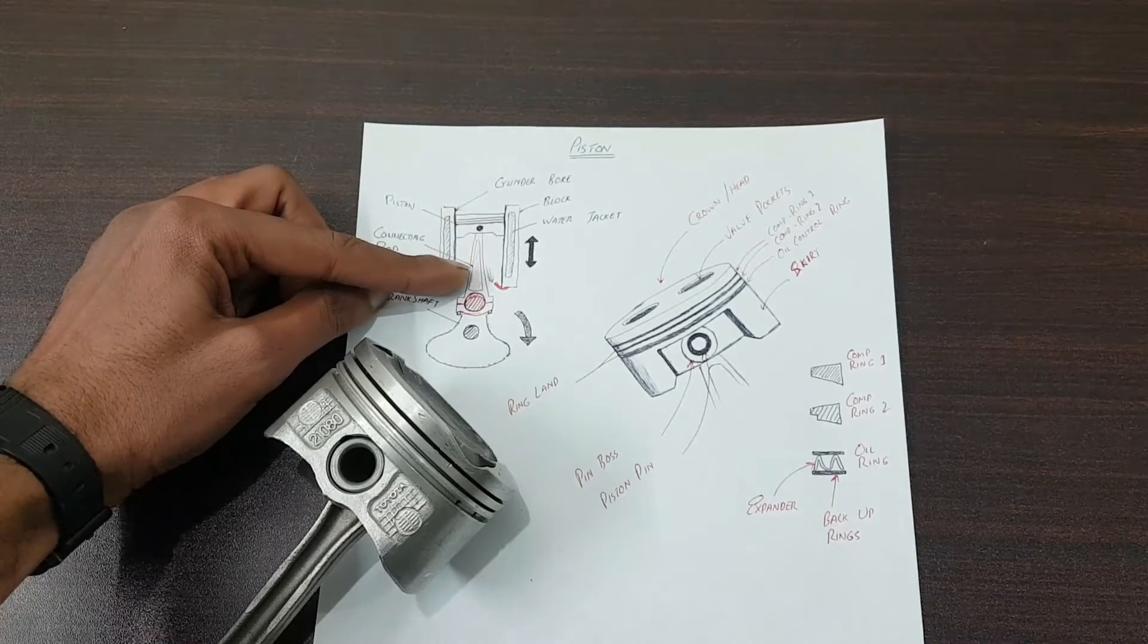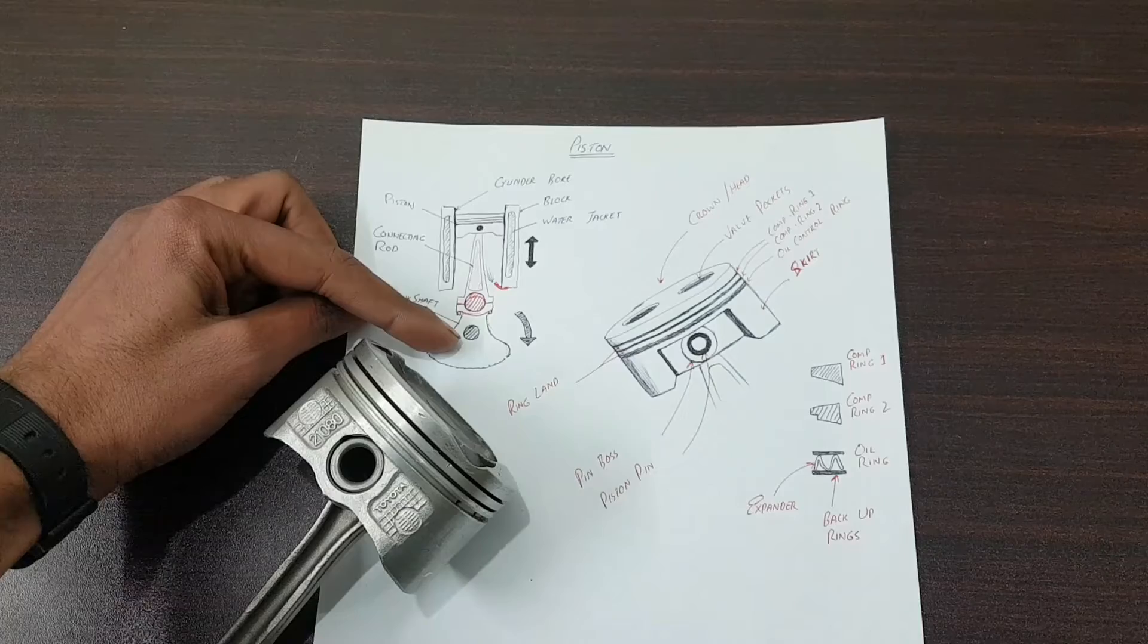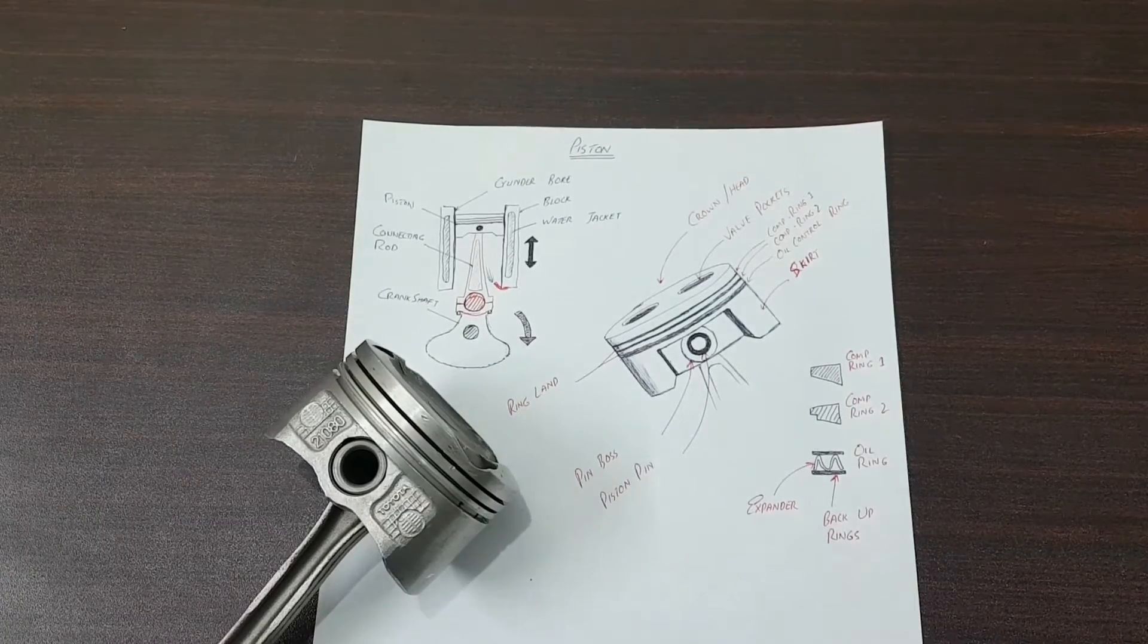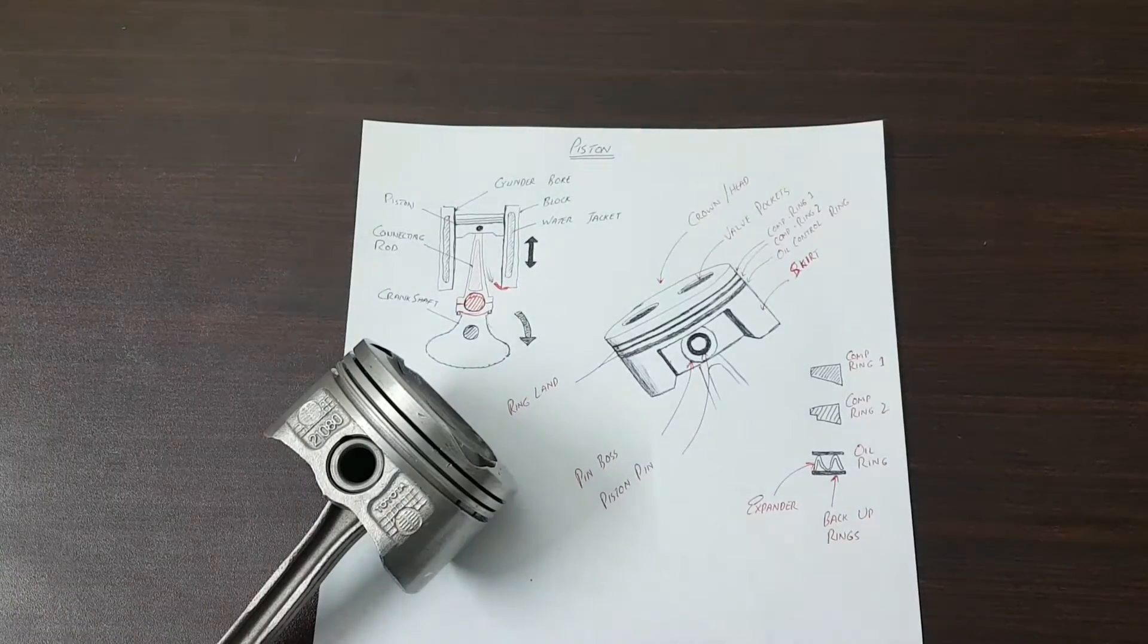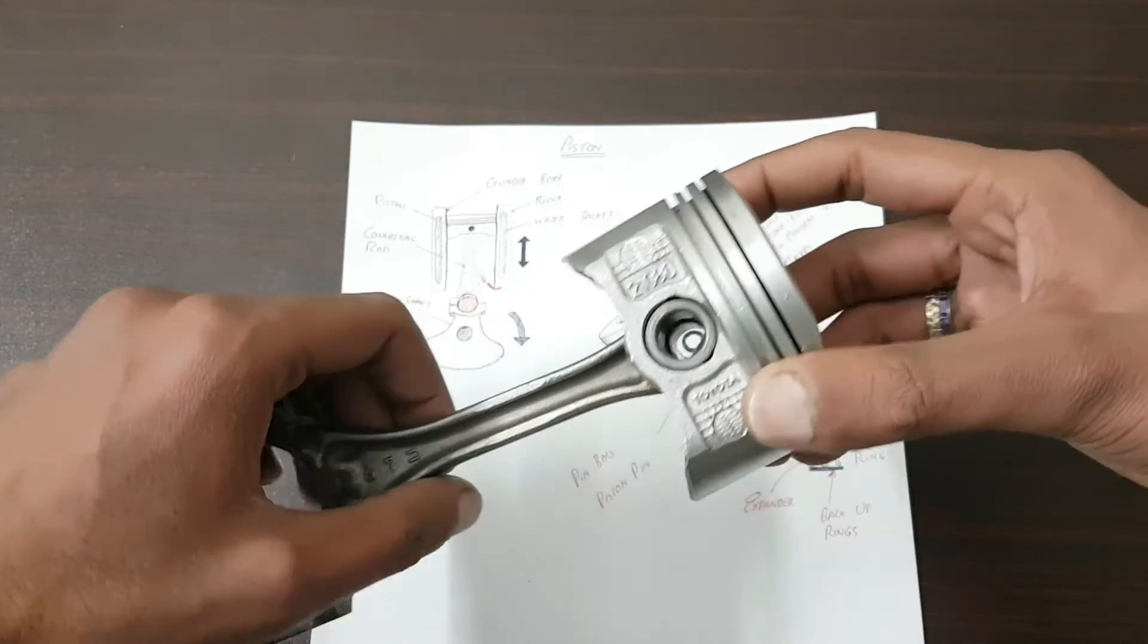Piston movement is transferred to the connecting rod and then to the crankshaft. If you are preparing for your exam, you can draw this kind of diagram on your paper - it just took me one and a half minutes.